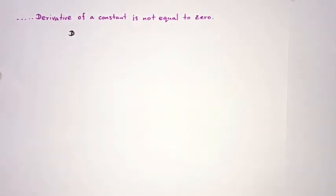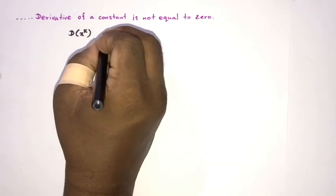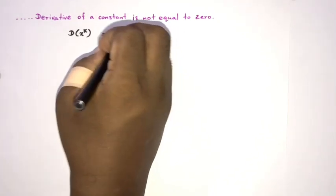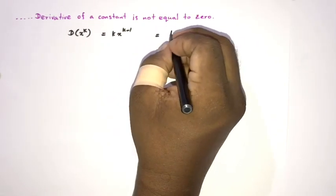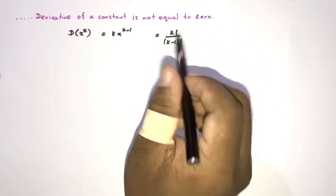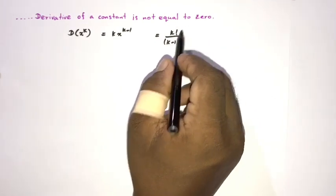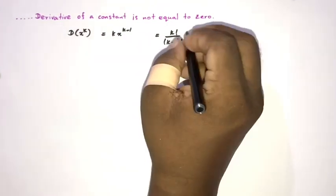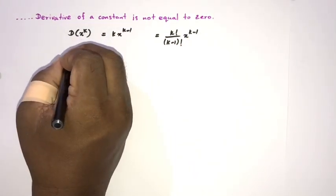The derivative of x to the k — by the general power rule — is k times x to the k minus 1. We can also write this as k factorial over (k minus 1) factorial, because k factorial equals k times (k minus 1) factorial, so the (k minus 1) factorial cancels, leaving k times x to the k minus 1.